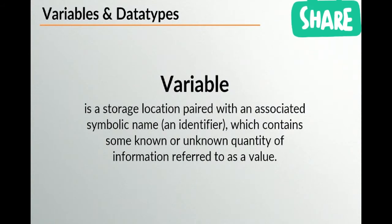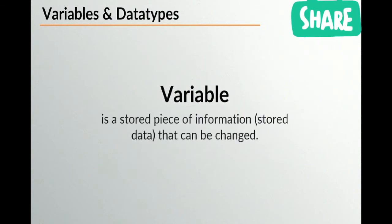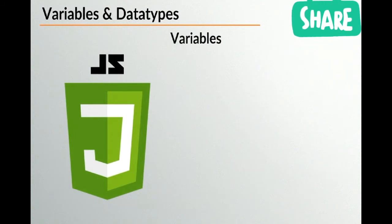A simpler definition: a variable is a stored piece of information — stored data — that can be changed. You can store a piece of data inside a variable and change it whenever you like. Additional information: a variable is a named container for storing values. Once you've created this container, you can always refer to whatever value is stored inside it by referencing the original name of that variable.